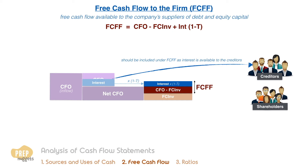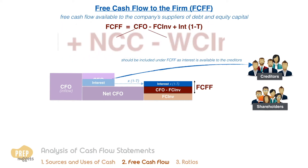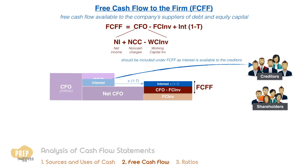Another common way of expressing this is in terms of the net income. We know that CFO is the net income, adding back non-cash charges like depreciation and amortization, less working capital expenditures. The alternative way of expressing FCFF is as such.